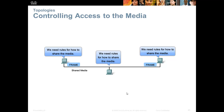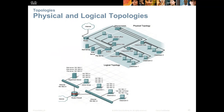The data link layer is also in charge of controlling access to the media. We can't have all computers communicating on the wire simultaneously because collisions can occur. We need rules for sharing the media. These rules depend on our physical and logical topology. A physical topology is how devices are actually physically laid out and cabled — where computers, hubs, switches, and routers are located in a building. A logical topology defines how we control access to the media.